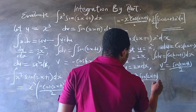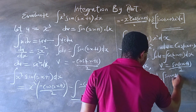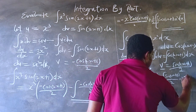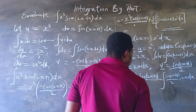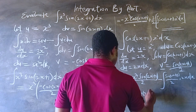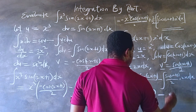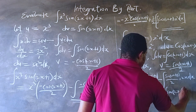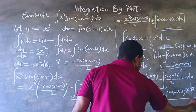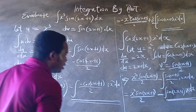Minus the integral of v times du, where v is sin(2x+1) all over 2 and du is 2x dx. Rewriting properly, the 2 in du cancels with the 2 in the denominator, leaving x² sin(2x+1) over 2 minus the integral of sin(2x+1) times x dx. We still have an integral in our solution, so we need to repeat this process one more time.